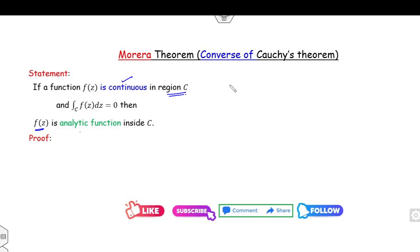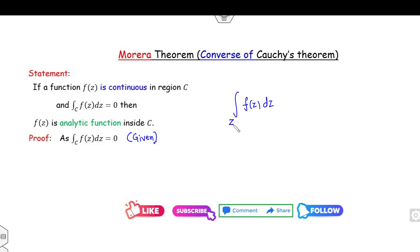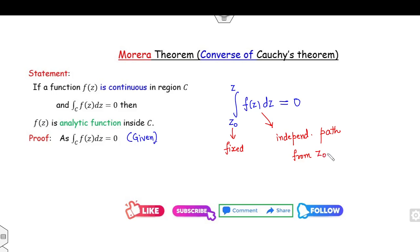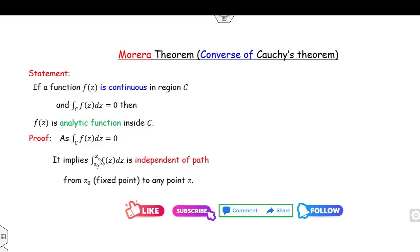The proof is very simple — just three or four lines. It is given that the integration of f(z) is 0. We know that the integration of f(z) from any fixed point z₀ to z equals 0. When the integration is 0, it means this integration is independent of the path, starting from z₀. So the integration from z₀ to z is independent of the path from z₀ to any point.